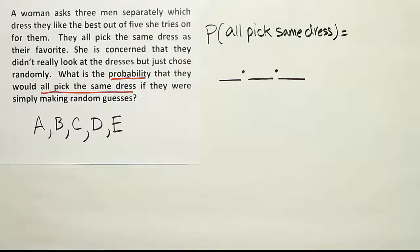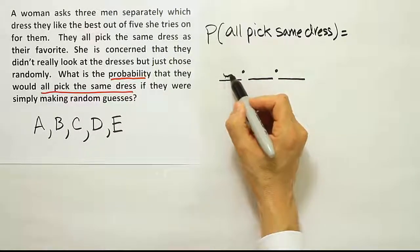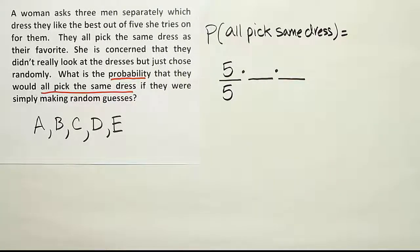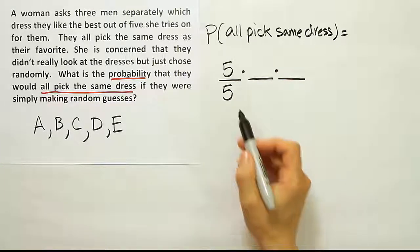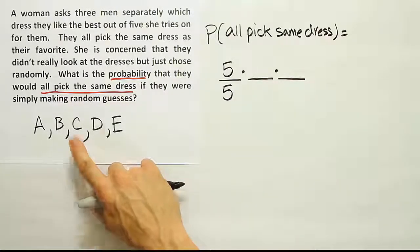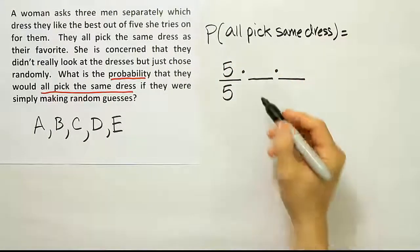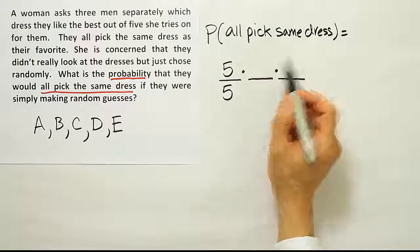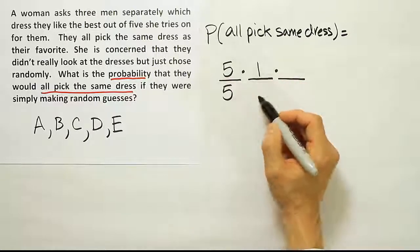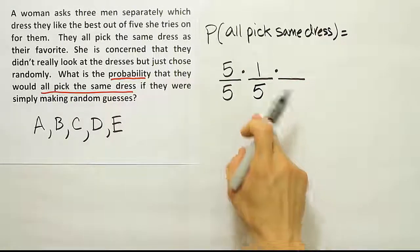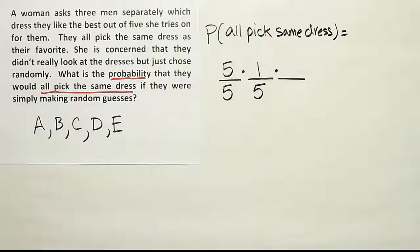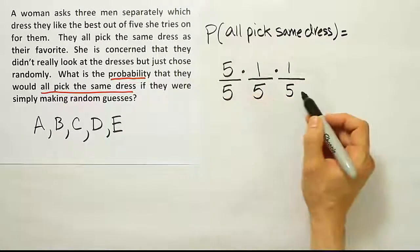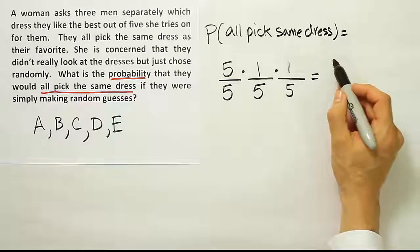There's another way to do this problem. The first guy can pick anything he wants — he can choose any of the five dresses since he's first. He essentially has five dresses to choose from out of five total, so he can't pick the wrong dress because no one else has picked yet. Whatever he picks — say dress C — everyone else must choose that same dress. So the second guy has only one valid choice out of five options: one fifth. The third guy likewise must pick that one dress out of five: one fifth. Working this out gives one over 25.